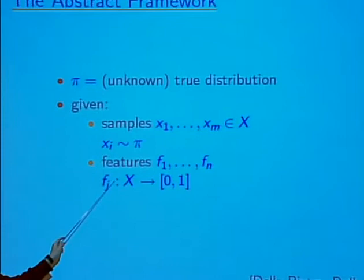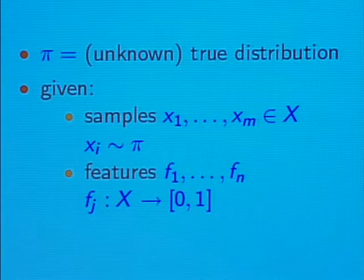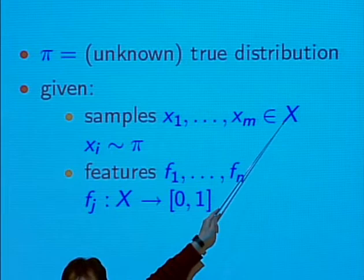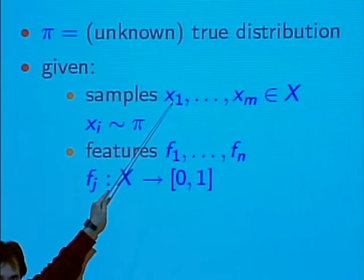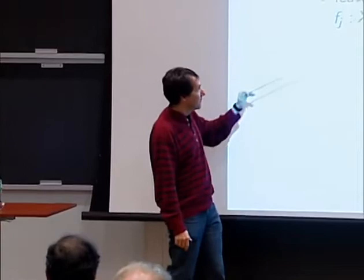To first approximation, you can think of these features as the environmental variables, because an environmental variable is really a feature in this sense. Capital X is our map — all the locations on the map. The xi's are the presence records. And an environmental variable is a real-valued function over the entire map. But in a moment, I'm going to change the kind of features we're talking about.